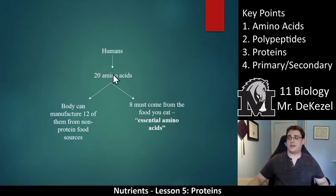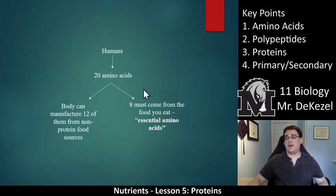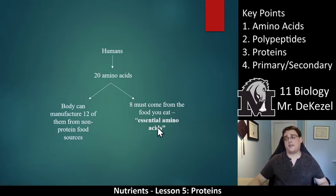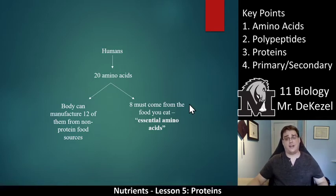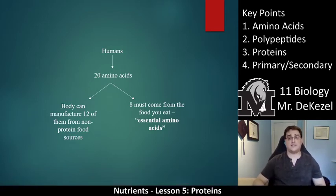Humans have 20 amino acids. Twelve of them our body can manufacture, but 8 of them have to come from what we eat — and remember, when anything comes from what we eat only, they are essential. So there are 12 non-essential amino acids and 8 essential amino acids. There are 12 building blocks you can make, but 8 that you must eat and ingest so that you can use them.